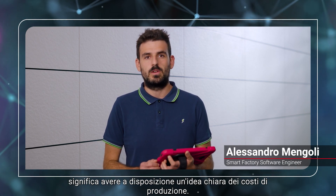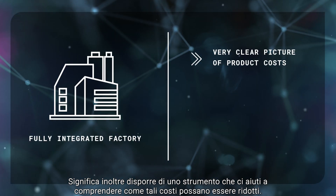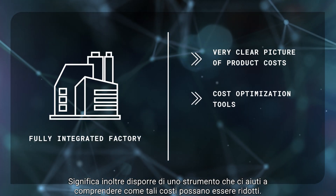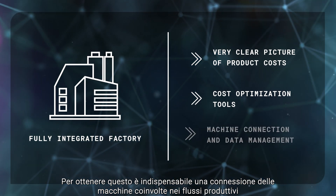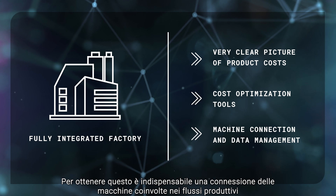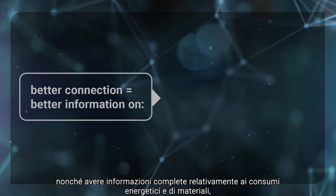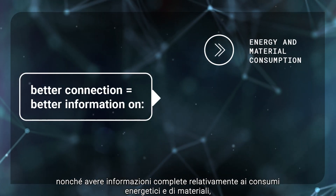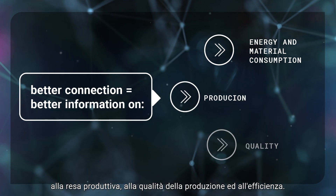Achieving the goal of a fully integrated factory requires a very clear picture of product cost. It also requires tools to help us understand if and how cost can be reduced. Obtaining this is essential to connect the machines involved in the production flows, to have reliable information on energy and material consumption, on production efficiency and on quality.